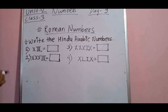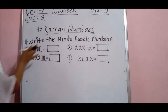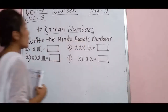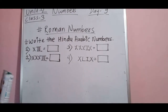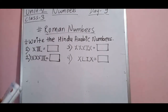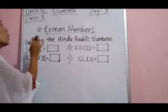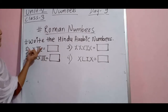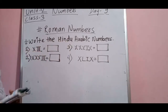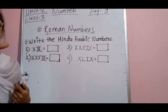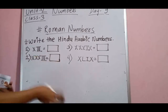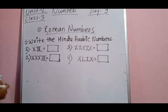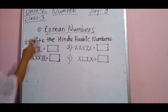Here is a question related to Roman numbers. Look here — you have to write the Hindu-Arabic number. All 1, 2, 3, 4, 5, 6 and so on — all those numbers are called Hindu-Arabic numbers. Here the question gives a Roman number and you have to write the Hindu-Arabic number for it. As I have shown you the Roman numbers from 1 to 50, with the help of that you can solve such type of question.